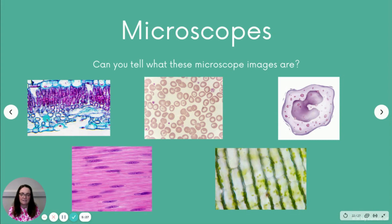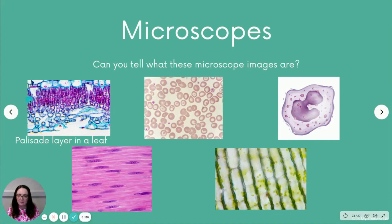The first one is the palisade layer in a leaf — the dark ones here are all palisade cells. If you look at a single palisade cell you can see the little white bit in the middle — that is the vacuole within that single palisade cell.